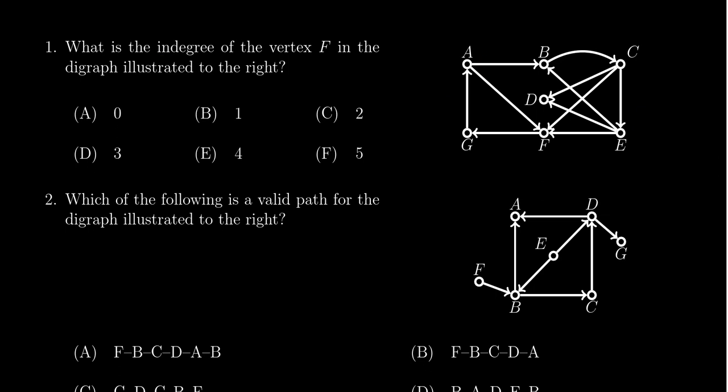So we look for the vertex F right here. The in-degree is the number of arrows that are coming into the vertex there. We see there's three arrowheads coming in.